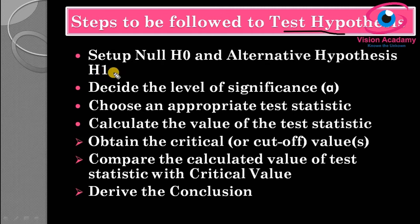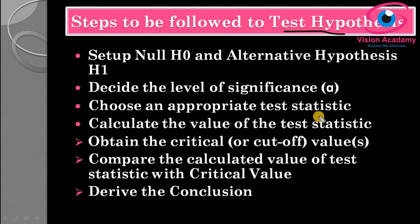In some books the steps may vary — some are elaborated and some are merged with others — but generally these steps are followed by most people for testing a hypothesis. First: set up null and alternative hypothesis. After that, decide the level of significance, choose an appropriate test statistic, calculate the value of the test statistic, obtain the critical value, compare the critical value with the test statistic, and finally derive a conclusion.